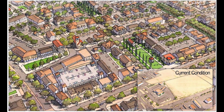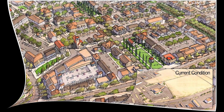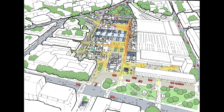Here we can see the example of the Radburn model, which was done by Clarence Stein and Henry Wright. The design of the Radburn neighborhood model was, in essence, a hierarchical one comprising four levels: enclave, which means residential area, block, super block, and neighborhood enclave. The fundamental component was an enclave of twenty or so houses.